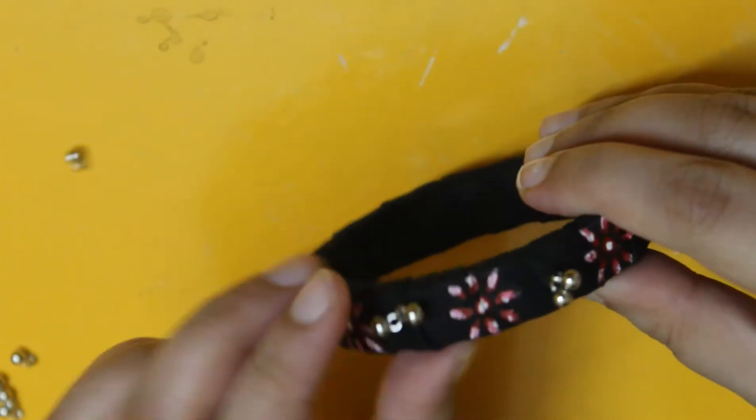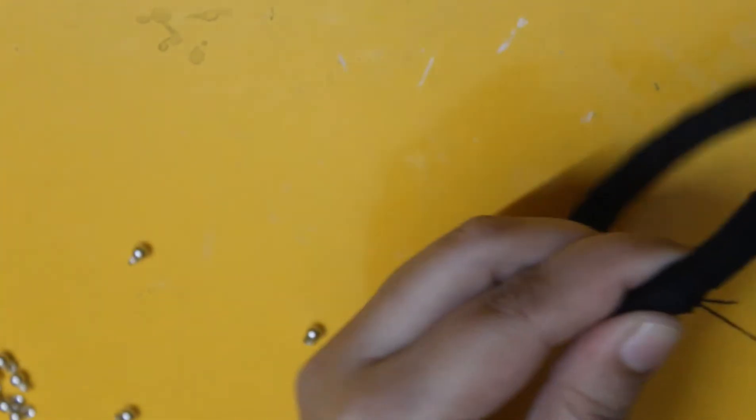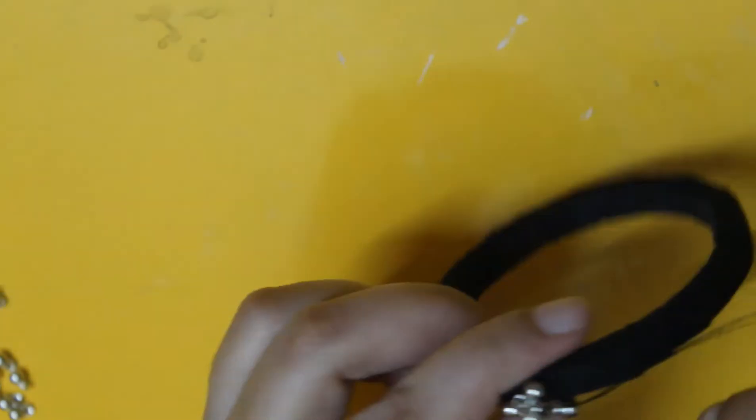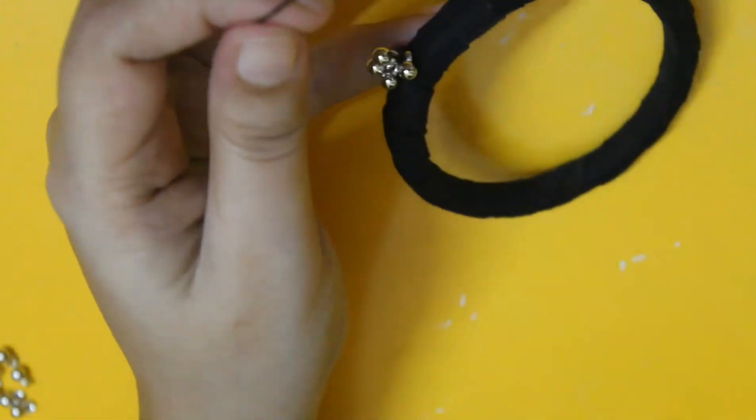And our main bangle is done. For the thinner bangles on the side, I am just adding a few trinkets using the same technique as I used to draw the flowers on the main bangle.